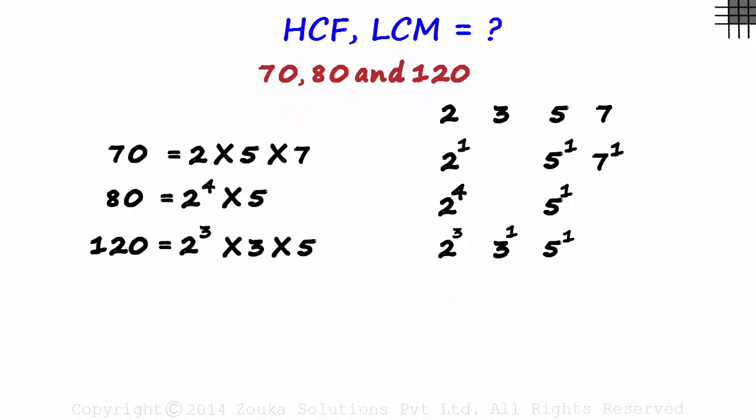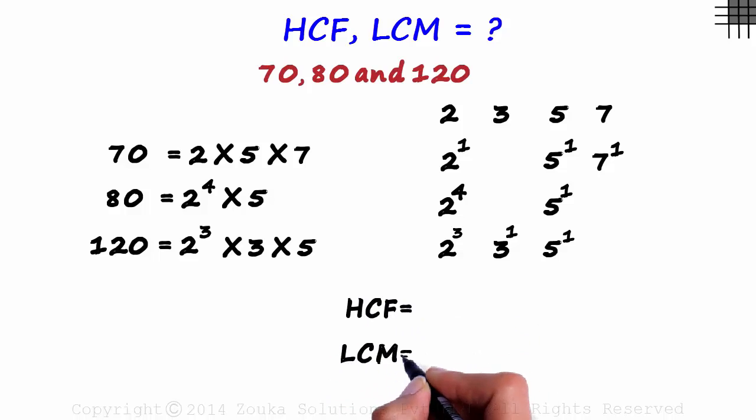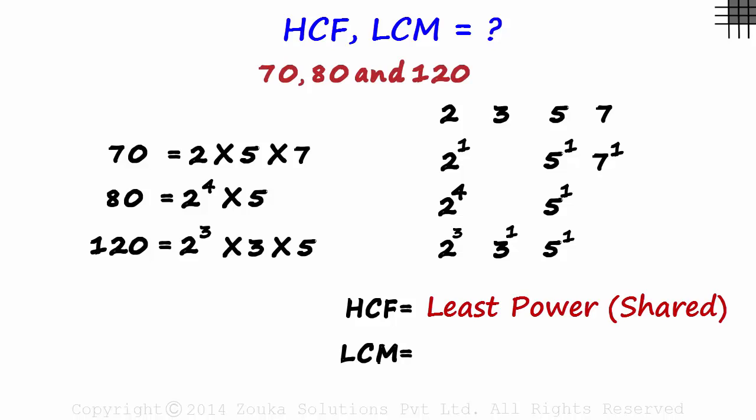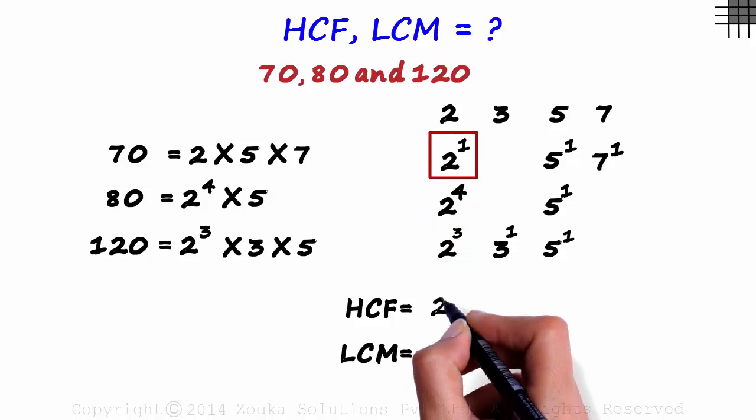With this ready, we can easily find the HCF and the LCM. HCF is the product of the least powers of shared factors. As there are only two prime factors which are shared, we look at only those two columns. The least power in this column is 1. So we write 2 raised to 1.